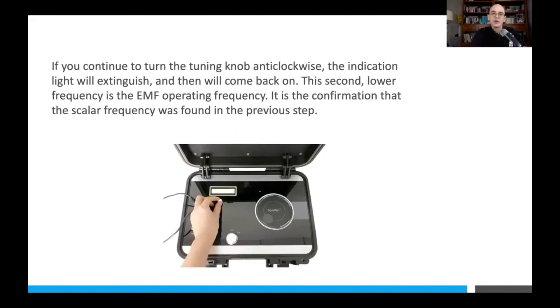Now if you continue to turn the tuning knob anti-clockwise, like you're not supposed to, the indication light will go off and then it will come back on again. And people will scratch their head and think, that's kind of weird. Why is that? Well, the lower frequency point is the EMF operating frequency. That's the one you don't want to operate at. Sometimes I've had this around 1.6 megahertz, other times it's been higher, about 3.5, 3.6 megahertz.